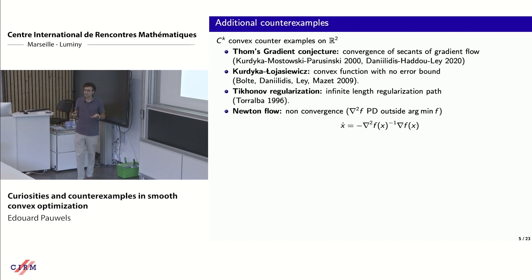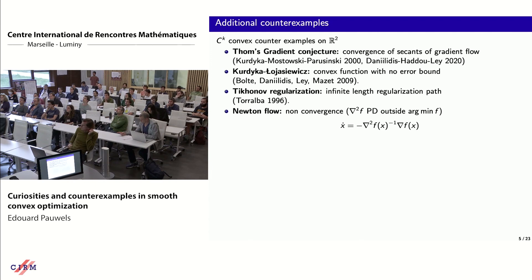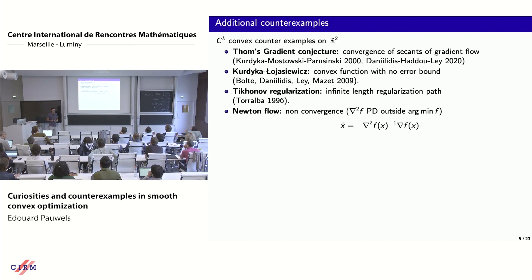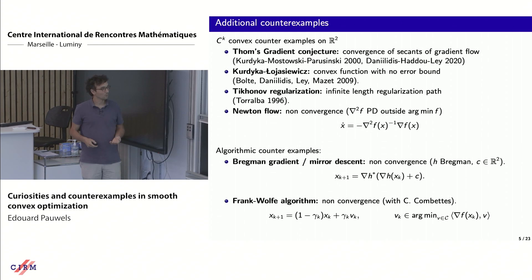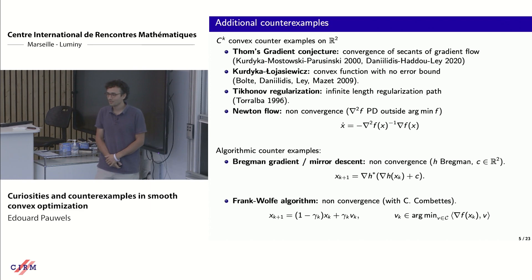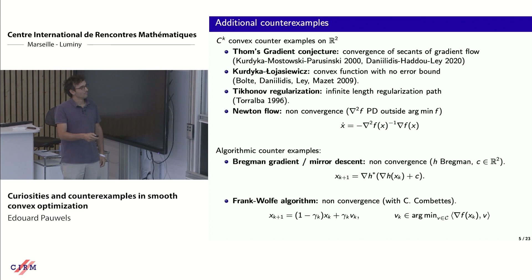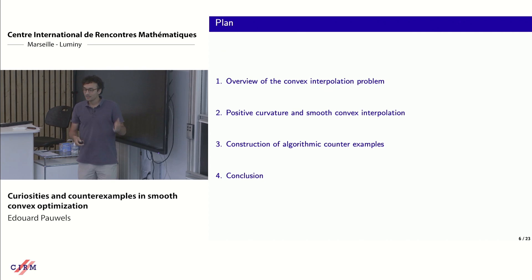Here are some examples. We have a counter-example to Thom's gradient conjecture in the convex setting, relating to directional convergence of the gradient flow. We have functions without error bounds, a thick-enough regularization path with infinite length, and a pathological Newton flow — the continuous-time version of Newton's algorithm. Perhaps more interesting from a machine learning perspective are algorithmic counter-examples: a Bregman gradient or mirror descent algorithm that does not produce converging sequences, and a Frank-Wolfe algorithm that does not produce converging sequences — the latter being joint work with Cyril Combet, a postdoc with us.